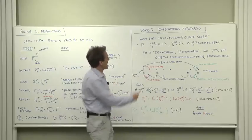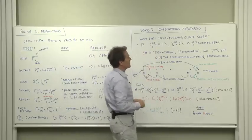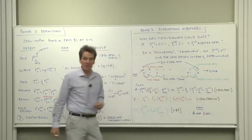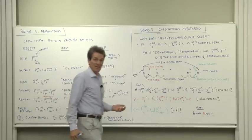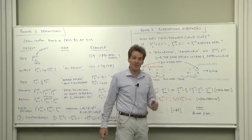For example, if like today the yields of one period bonds are about one-tenth of a percent, the yield of a ten-year bond is two percent, does that mean the ten-year bond is a better deal? Everybody go buy ten-year bonds.